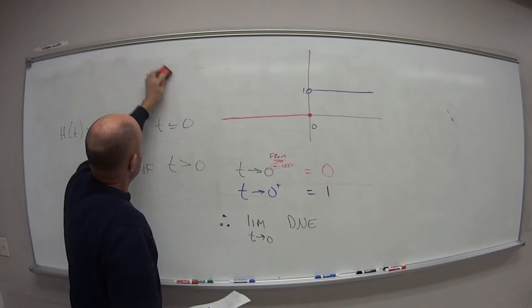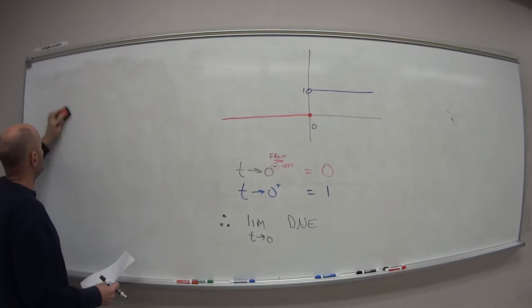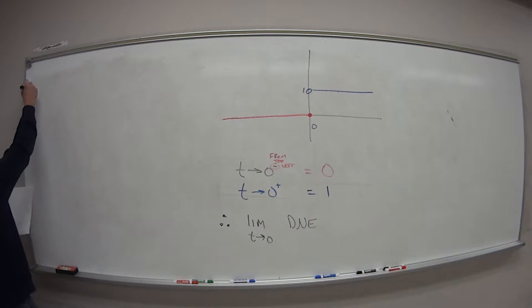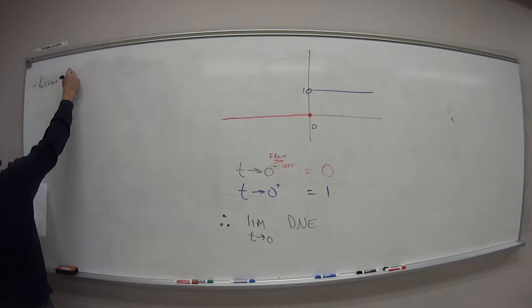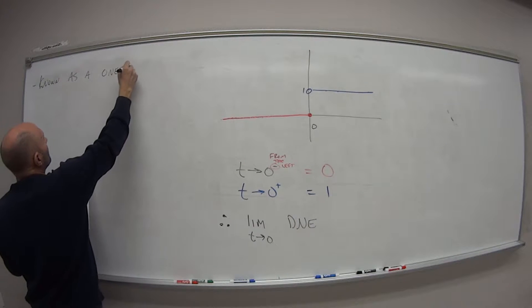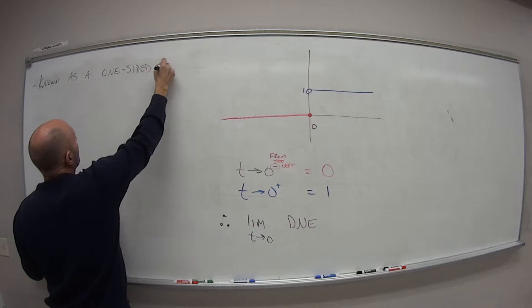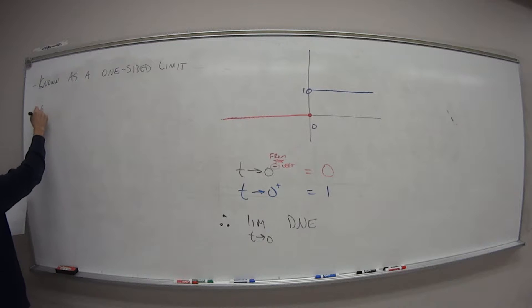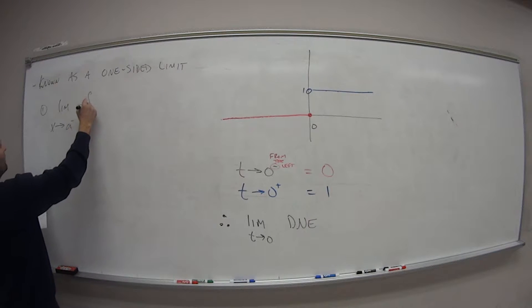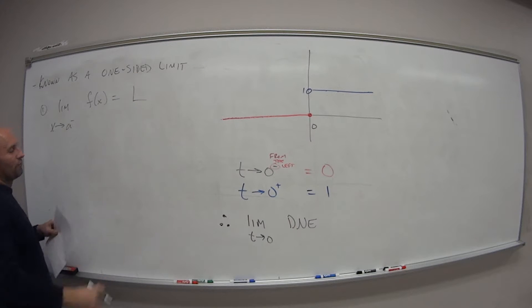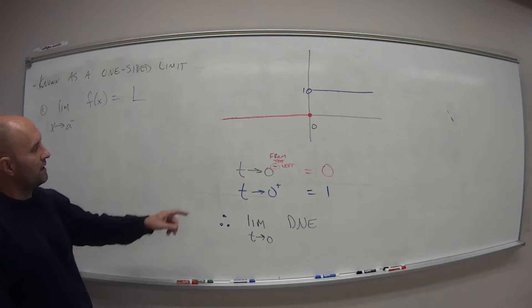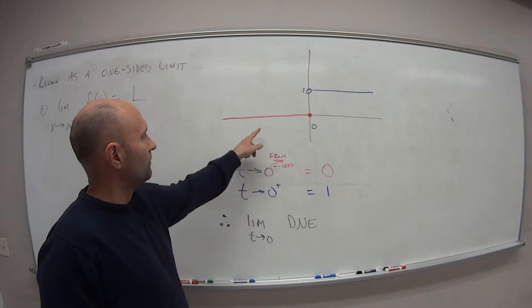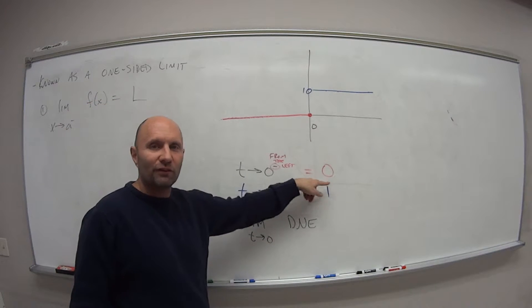So this has a special name. It's called a one-sided limit. So the limit as x approaches a from the left side of f of x is some value L. So in this case, the limit as t approaches 0 from the left side is equal to 0. This 0 is our capital L.